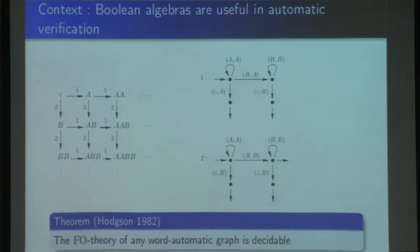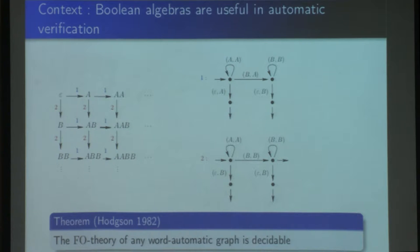For example, here you have the infinite quarter grid. Its vertices are words and the edge between the word AB and the word AAB is recognized by a finite synchronized transducer. It starts by reading the couple AA, then the couple BA, then the couple (empty word, B), and it accepts. Hodgson showed that the first-order theory of any word automatic graph is decidable, and this result essentially relies on the closure properties of the regular languages — the closure properties that make this class a Boolean algebra.